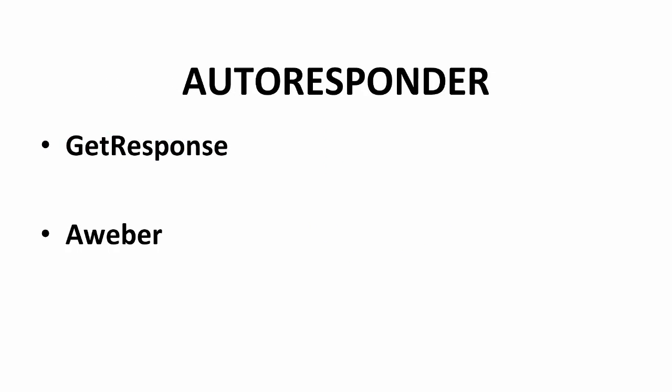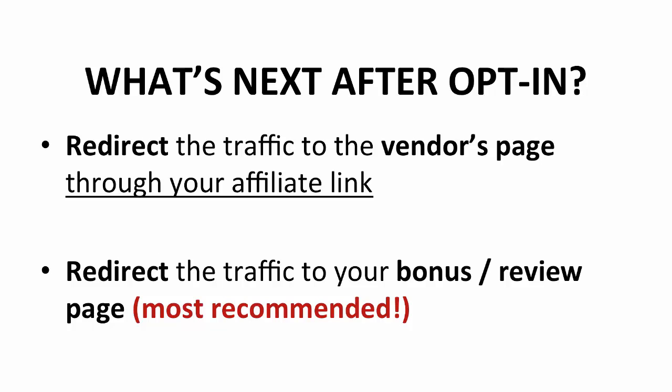With the expanding of your email list, you definitely need an autoresponder to manage your subscribers. I recommend that you subscribe to GetResponse or Aweber. Both are paid online software that help you manage your subscribers almost on autopilot. $15 per month for GetResponse and $19 per month for Aweber. After the opt-in email, you redirect the traffic to the vendor's page through your affiliate link. Or you can redirect the traffic to your bonus or review page first, before the vendor's page. This is the most recommended for you.